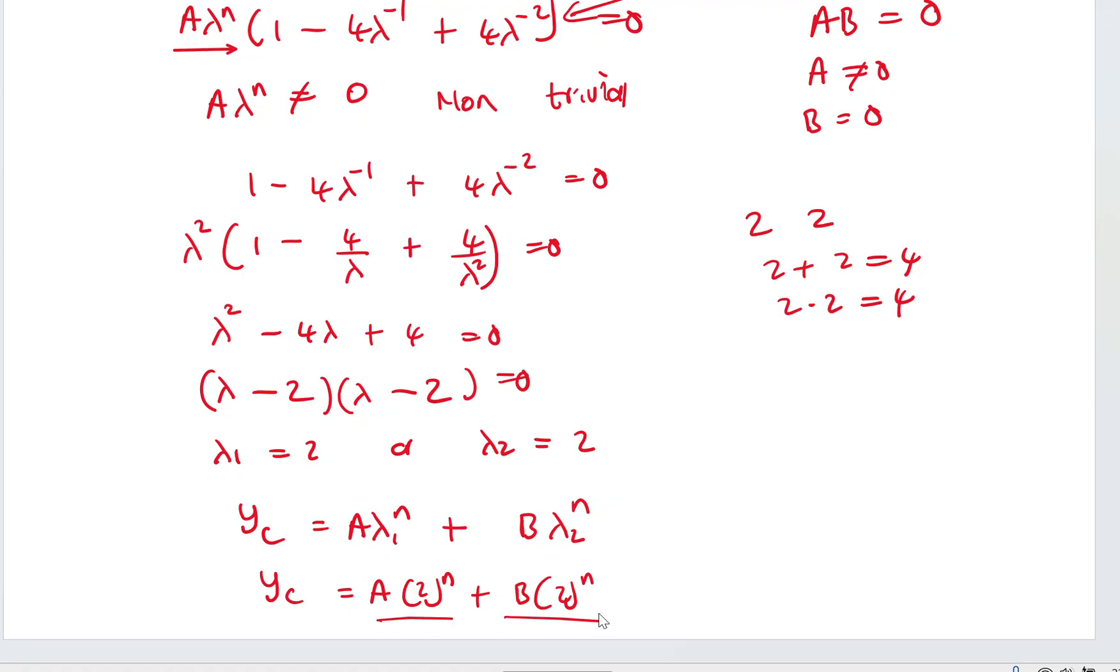So Y_C is equal to A(2^n) plus B(2^n). But these two terms here must not be the same or must not have the same form. Otherwise, if they have the same form, it means you can add them to give you something like this. So this is not the actual solution. So how can we make these two look different?